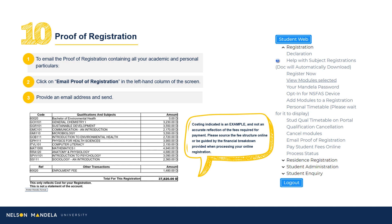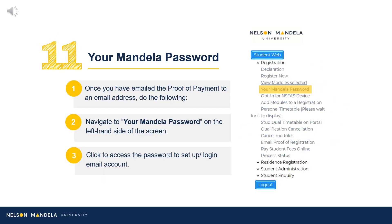Navigate to the left-hand drop-down menu on screen. Scroll to Email Proof of Registration. Insert an address of your choice and click Send. Once the document has been successfully emailed, navigate to the drop-down menu and click Your Mandela Password.